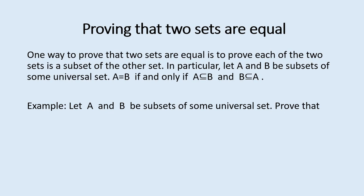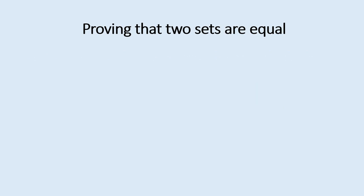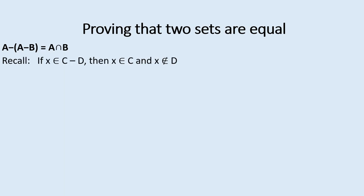Let A and B be subsets of some universal set. We want to prove that A minus (A minus B) equals A intersect B. Recall: if X is in C minus D, then X is in C and X is not in D. And if X is not in C minus D, then X is not in C or X is in D.